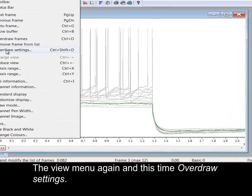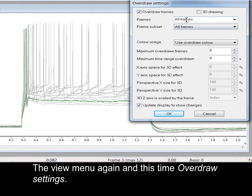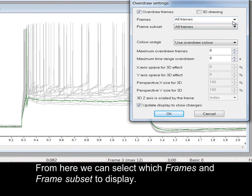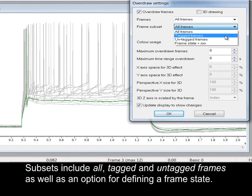The view menu again, and this time overdraw settings. From here we can select which frames and frame subset to display. Subsets include all, tagged and untagged frames, as well as an option for defining a frame state.